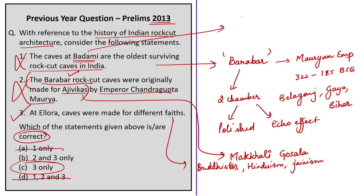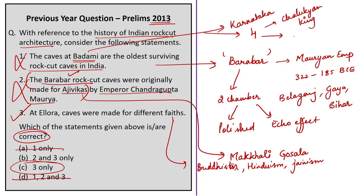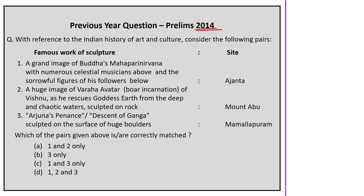As additional information, the Badami Caves are located in the town of Badami in north-central Karnataka. They are a group of four cave temples carved out of the hill opposite Badami Fort. The Chalukyan king Mangalisha was responsible for their completion. Out of the four caves, three are Brahmanical — one Shaivite, one Vaishnavite, and one with both Shaivite and Vaishnavite themes — while the fourth depicts Jainism.